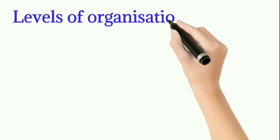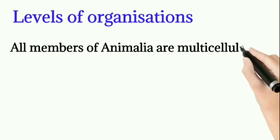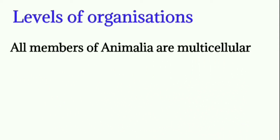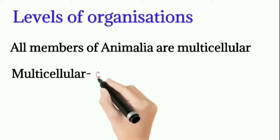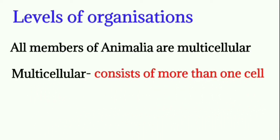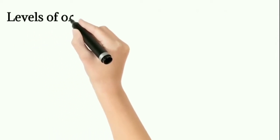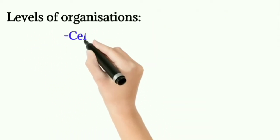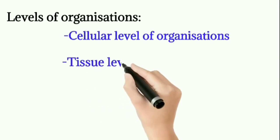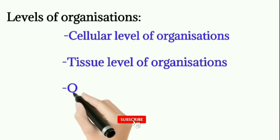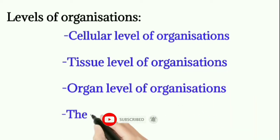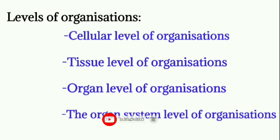Let us study about the levels of organizations. The various organisms exhibit different types of levels of organizations. All members of Animalia are multicellular, meaning they consist of more than one cell. The levels of organization have four types: cellular level of organization, tissue level of organization, organ level of organization, and organ system level of organization. Let us study about them one by one.